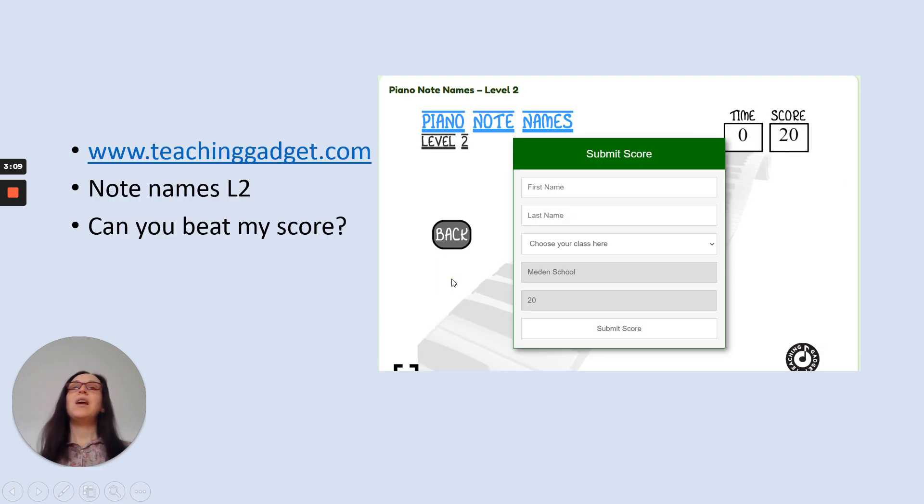Okay, so I'd like you to head over to teachinggadget.com. We're going to play note names level two, level two, and that has some of these black notes in. Okay, so can you beat my score? I played it and I got a score of 20. Can you beat my score? Press pause.